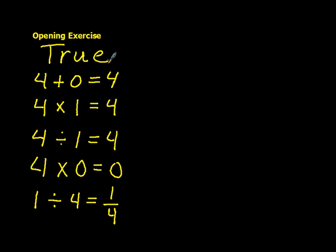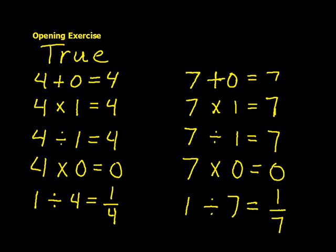Now on to our next question. Every place you see a number 4, take out the number 4 and write the number 7 and see if those statements are true. So go ahead, pause the video, do your work, and come back when you're ready. So you probably, once again, quickly figured out that all five statements are true when we substitute the number 4 with the number 7.